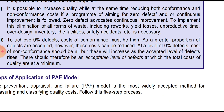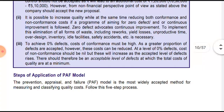If we want zero defects or high quality with no defects, conformance costs will be high and non-conformance cost will be zero. But if we try to reduce the conformance cost to a lower level, defects are accepted and non-conformance costs will increase. Therefore, the company should maintain an acceptable level of defects at which the total cost — both conformance and non-conformance — is at a minimum, achieving the optimum quality control level.